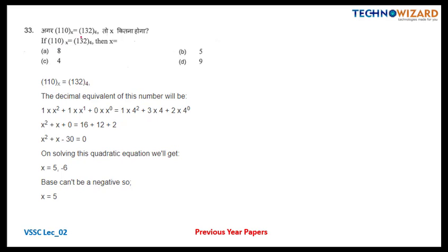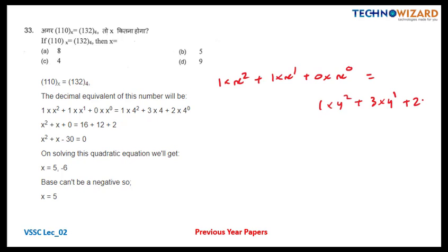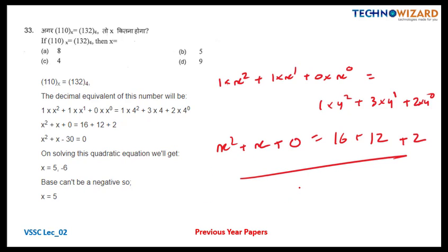Question number 33: if 110 base-x equals 132 base-4, find x. Setting up: 1·x² + 1·x + 0 = 1·16 + 3·4 + 2·1 = 30. So x² + x − 30 = 0. Solving gives x = 5 or x = −6. Since a negative base is invalid, the answer is base 5.